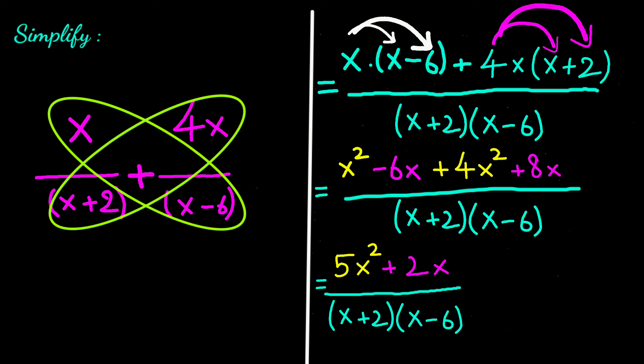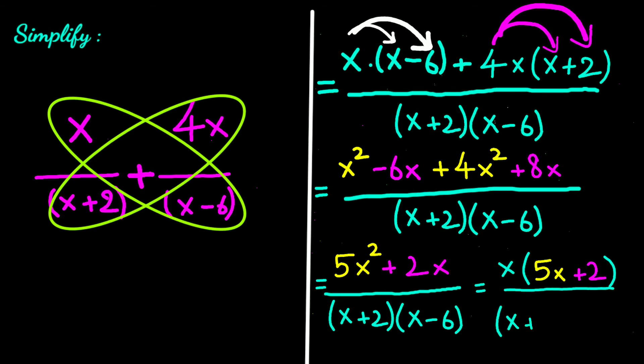Let's take x outside in the numerator. We have x times (5x plus 2), divided by (x plus 2)(x minus 6).